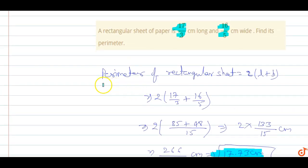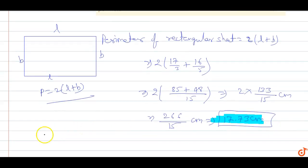What is perimeter? So this is the side L and this is the breadth B. So perimeter P is 2 times of L plus B. This is L also and this is also B, so perimeter is 2L plus 2B. So the answer for this question: perimeter is 17.73 cm.